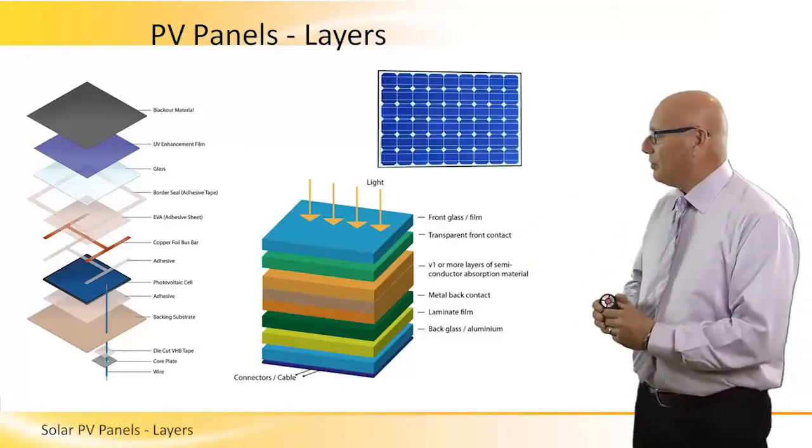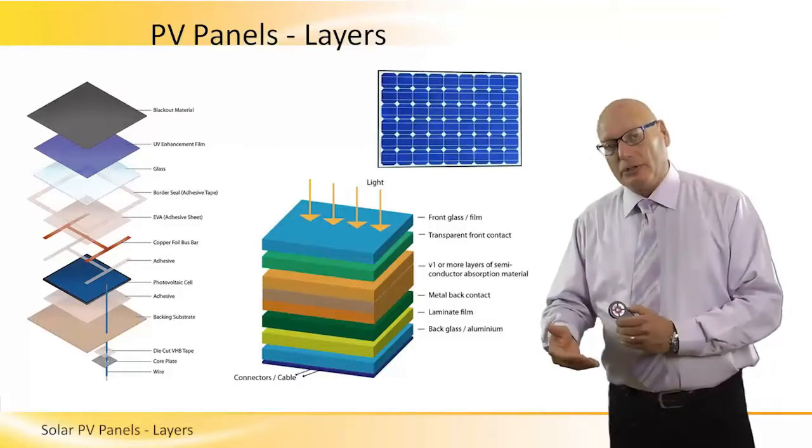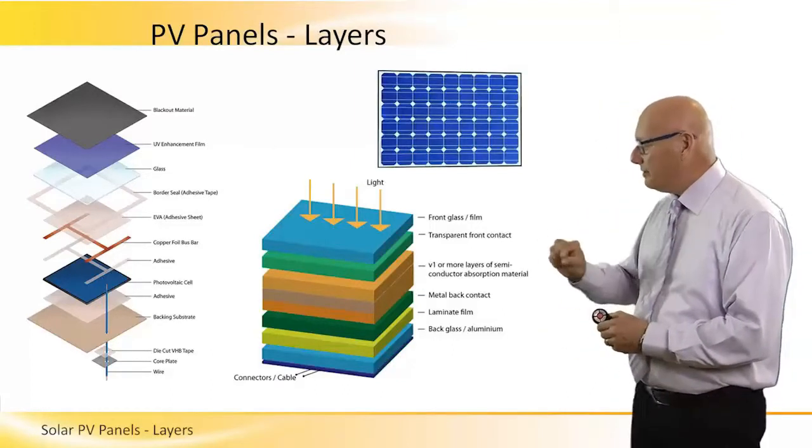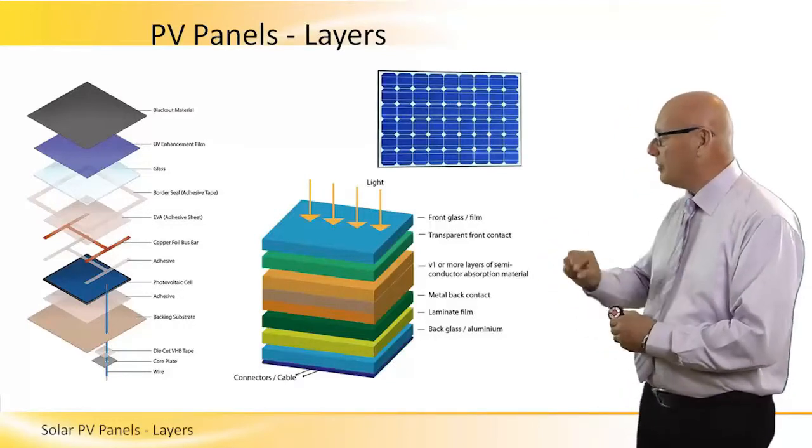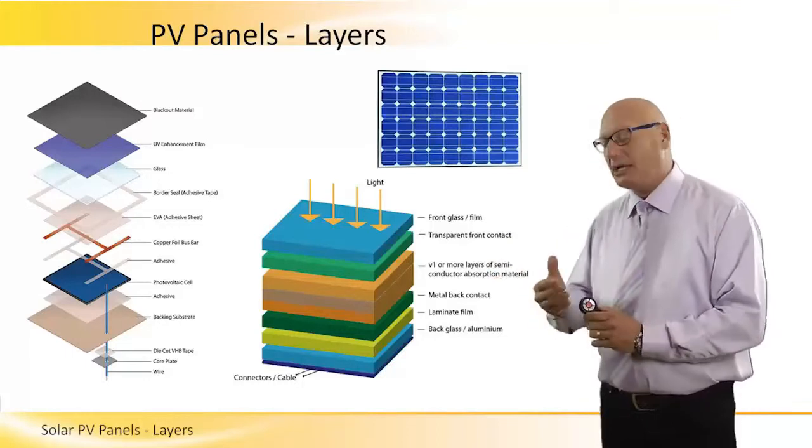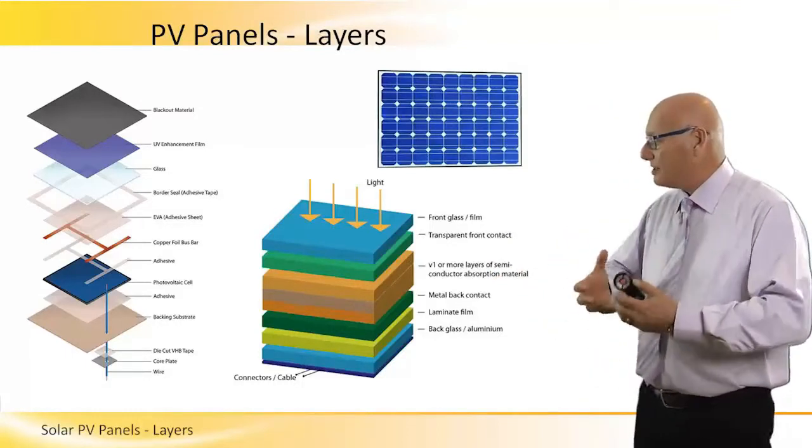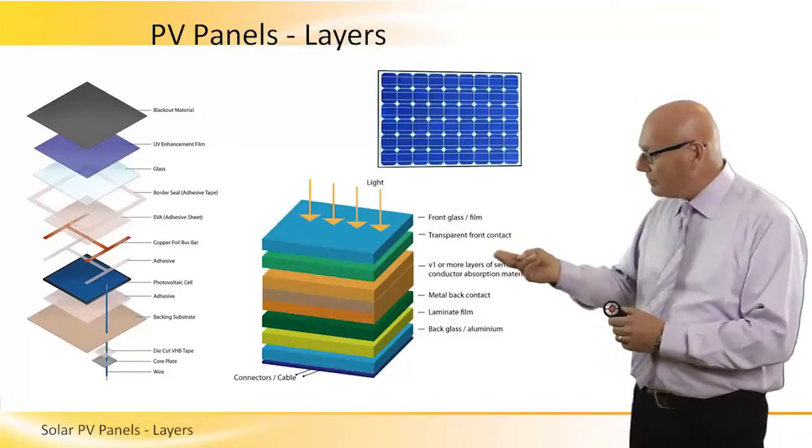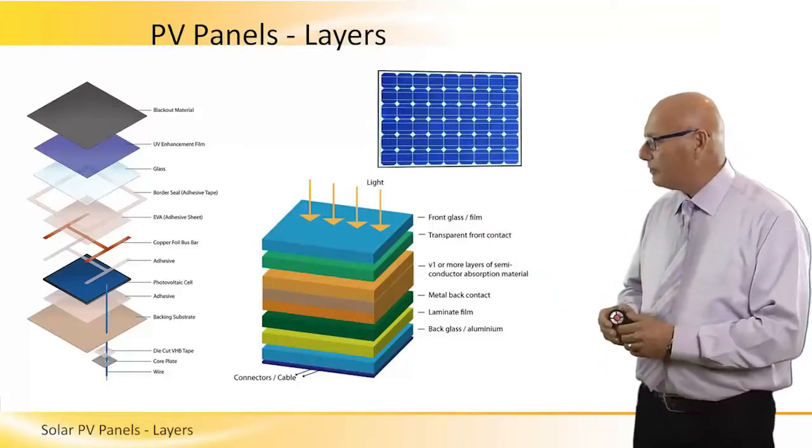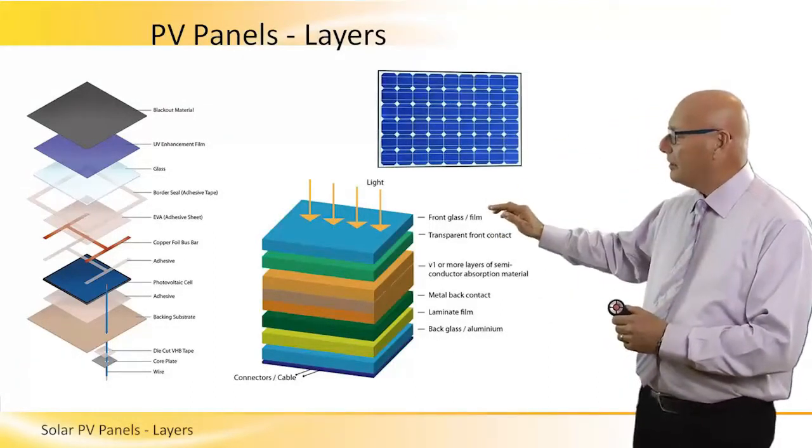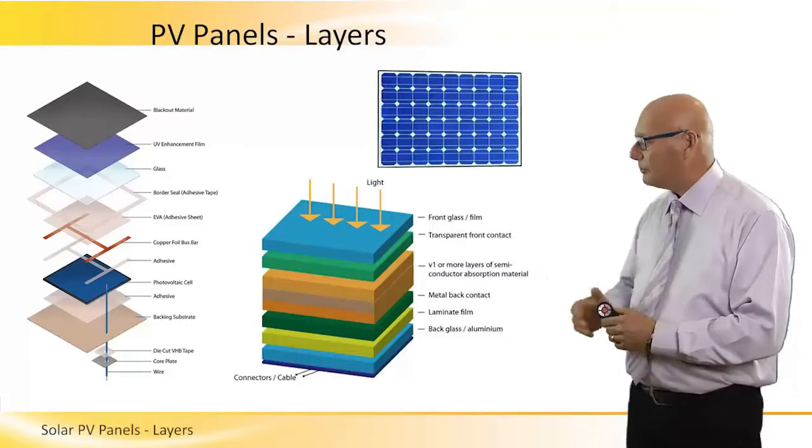And the green one below them is the other set of conductors. And then we have a laminating film, the yellow one, and then the blue one is a kind of back glass again, for mechanical strength to hold the system together. And an aluminum frame. Two cables and connectors coming from the bottom. One of them is from the top green layer and the other one is from the bottom green layer.